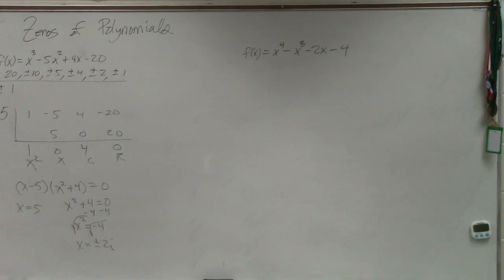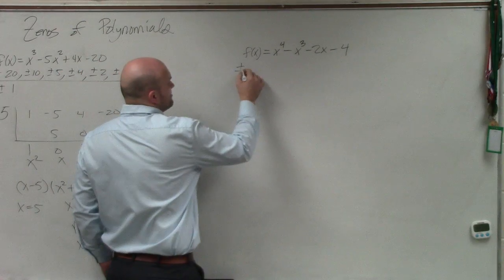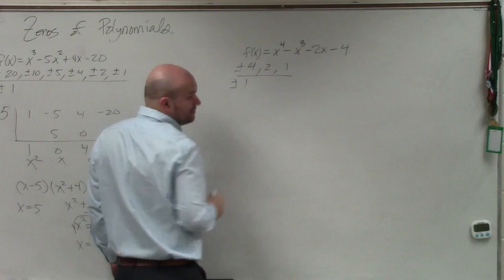Now, on this next example, I want you guys to practice doing the p over q. So therefore, we have plus or minus 4, 2, 1 all over plus or minus 1. Right?